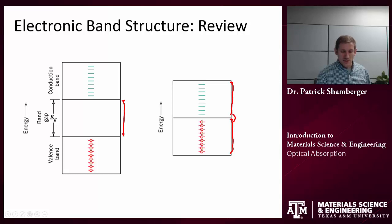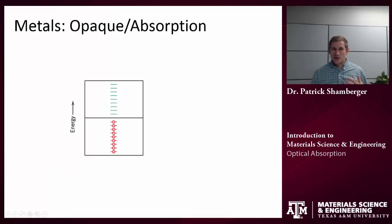So in semiconductors and insulators we have our filled valence band and our empty conduction band separated by some gap. In metals we would have one whole band and it's partially filled. Okay, now let's think about how light will interact in these two cases.